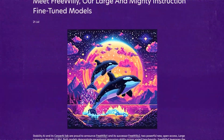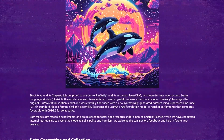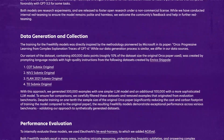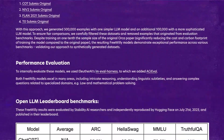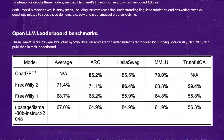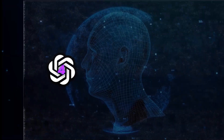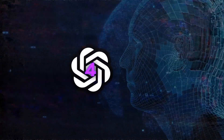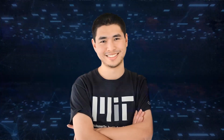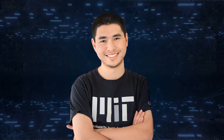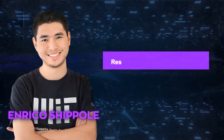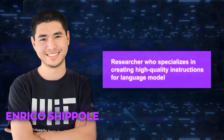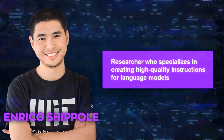Stability AI followed a similar approach for Free Willy models, but they used different sources of data and instructions. Instead of using GPT-4 as their teacher model, they used ChatGPT. They also used different datasets created by Enrico Schipel, a researcher who specializes in creating high-quality instructions for language models.